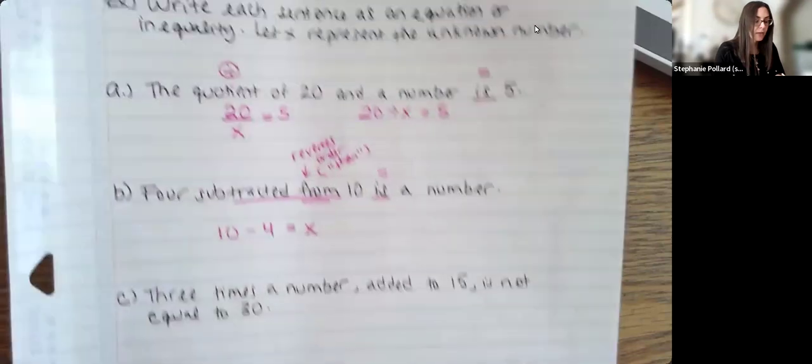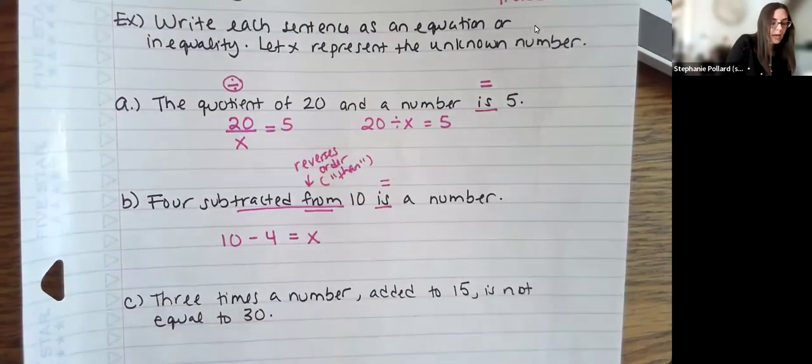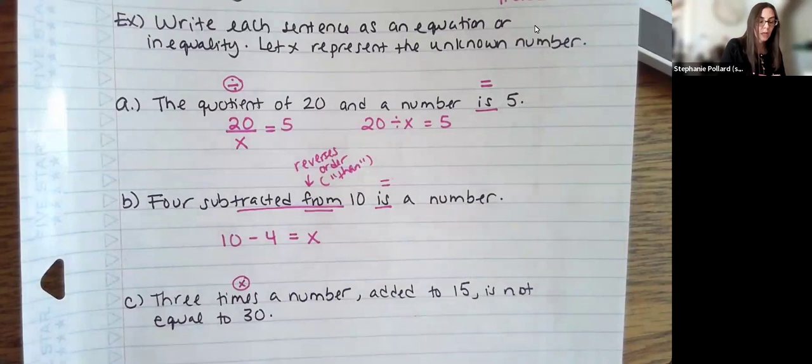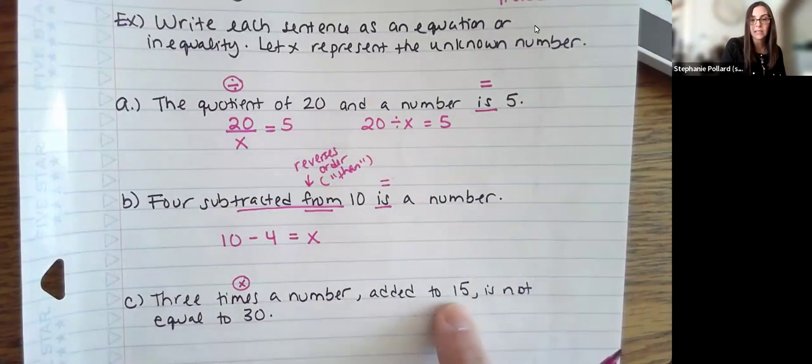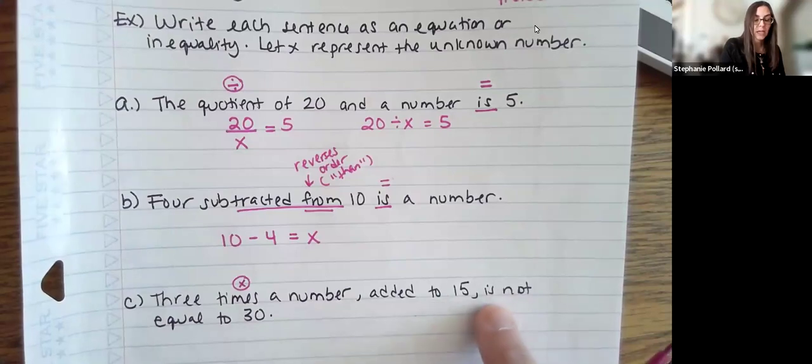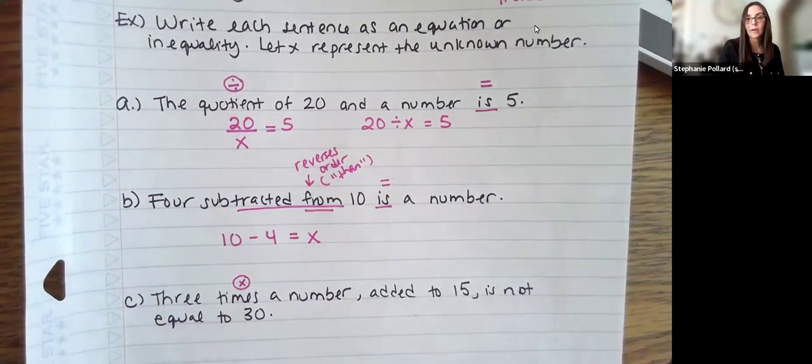Here I have 3 times a number. So times refers to, again, multiplication here. We're going to do that, then add it to 15. And then it is not equal to 30. So a little bit of a change there.